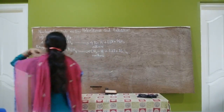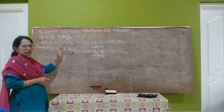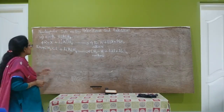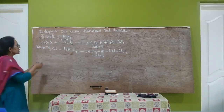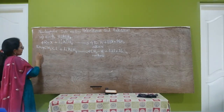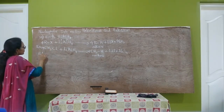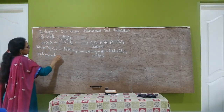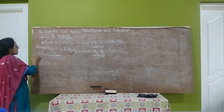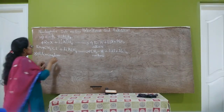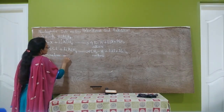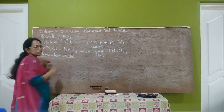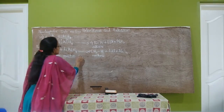So these are all the nucleophilic substitution reactions of alkyl halides or haloalkanes. The next reaction is elimination reaction. The first reaction was nucleophilic substitution reaction; now the second one is elimination reaction. This elimination reaction is also called as dehydrohalogenation.